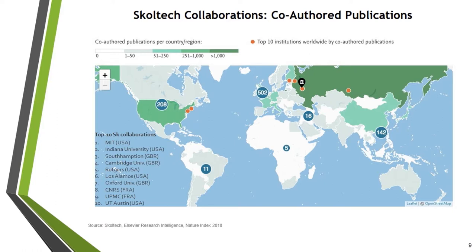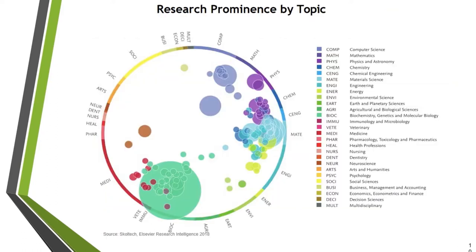We have partners in different fields, and Skoltech is quite focused. The importance of publication: in terms of prominence — hot topics we're involved in — the biggest is bio, with CRISPR research with NIH and so on as a strong part. Then you have materials, photonics, AI, and some engineering and energy related research. These are the focused areas of research and teaching at Skoltech.